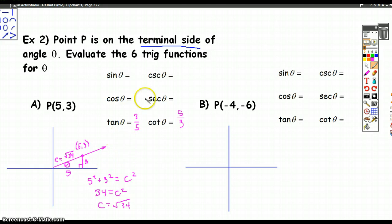And now we can get the other two. So sine is opposite over hypotenuse, 3 over root 34. Cosecant is the reciprocal of that. Cosine is adjacent over hypotenuse, so it's 5 over root 34. And secant is the reciprocal of that.